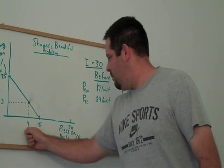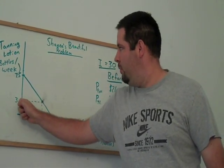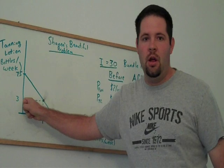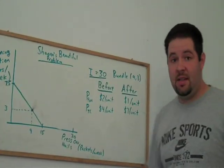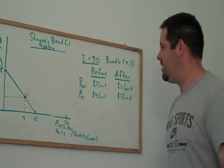Shannon actually buys 9 packets of press-on nails and 3 bottles of tanning lotion. Now, we can go ahead and check to see if she spends all of her money, but trust me, I've done the math, it works out.